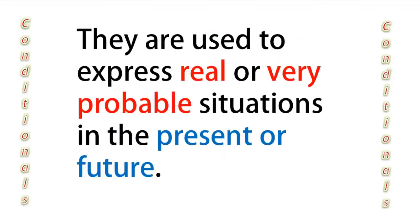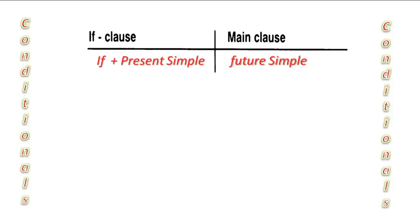Conditionals Type 1 are used to express real or very probable situations in the present or future. In the if-clause we use if plus present simple, and in the main clause we use the future simple with will.